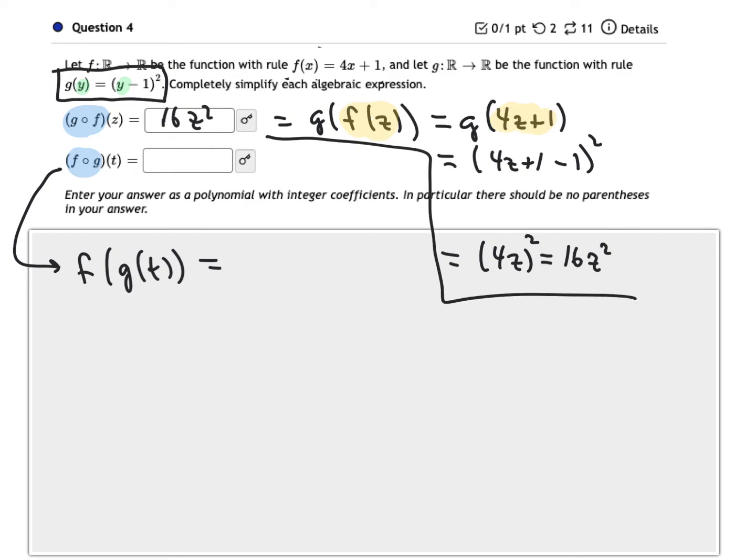So once again, I'm going to work inside the parentheses out. So I need g of t first. And so we know that the rule for g is the one that I already have circled up here.